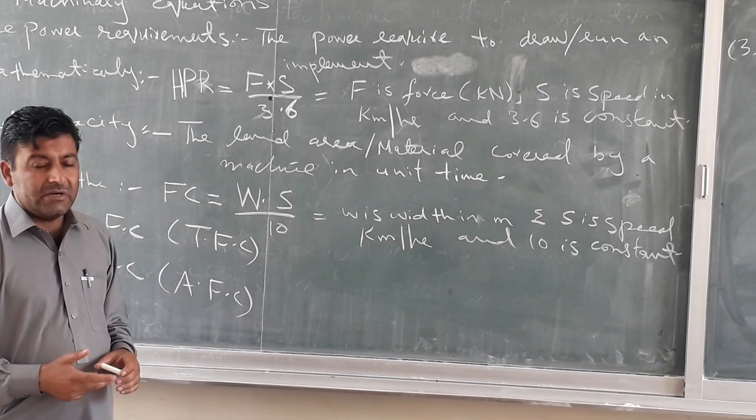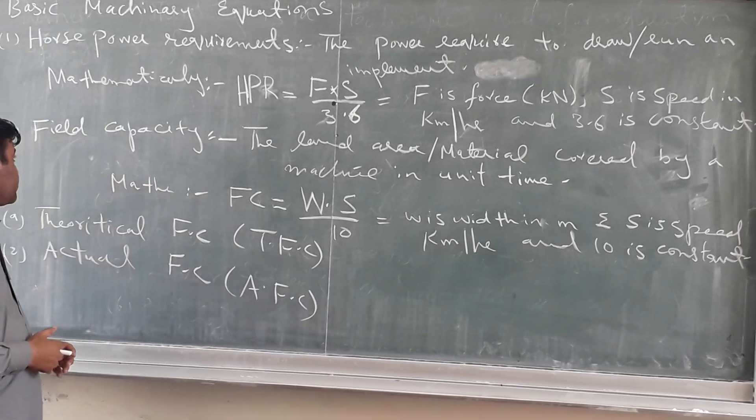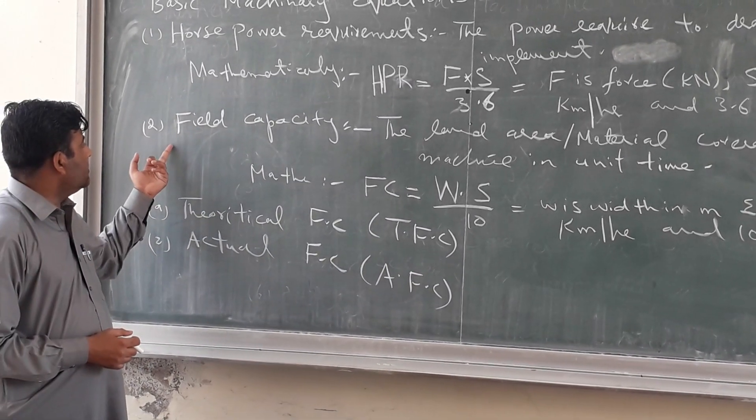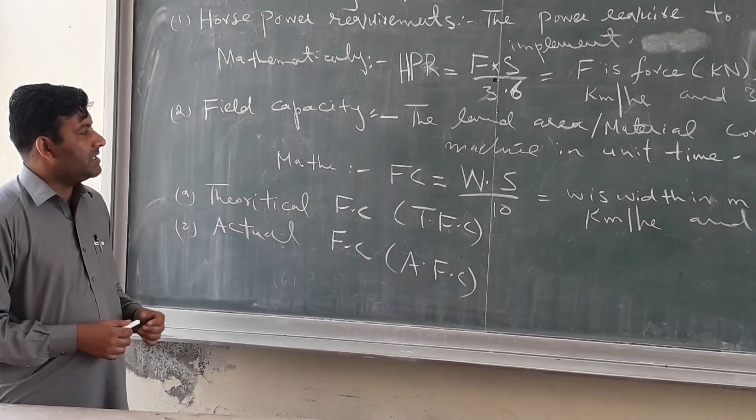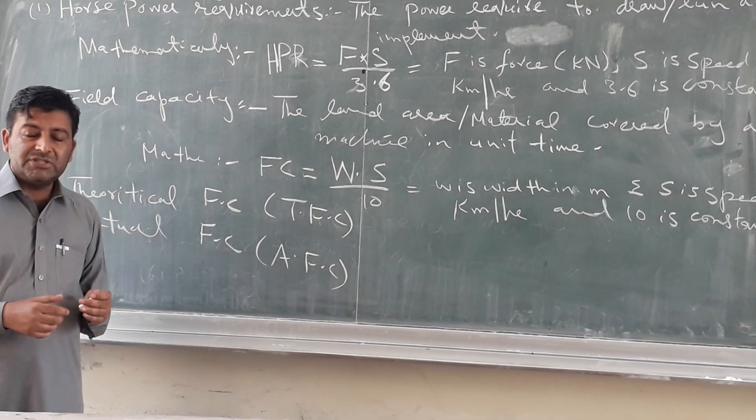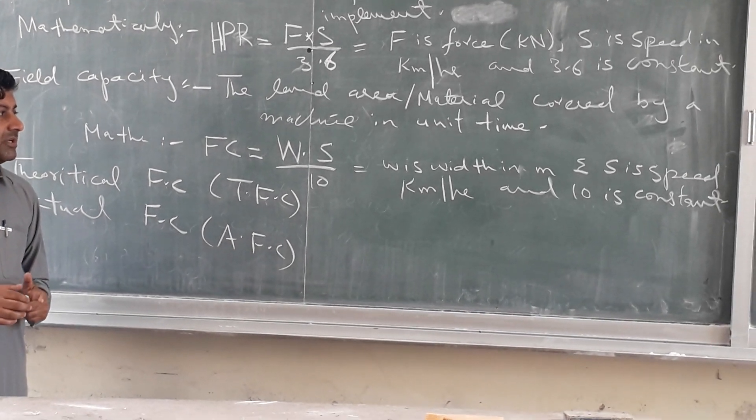Another equation is field capacity. So what is field capacity? It is the area or the material covered by a machine in unit time.